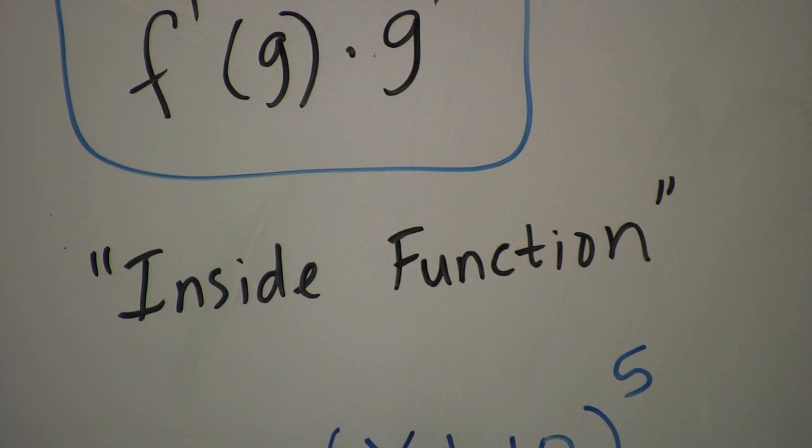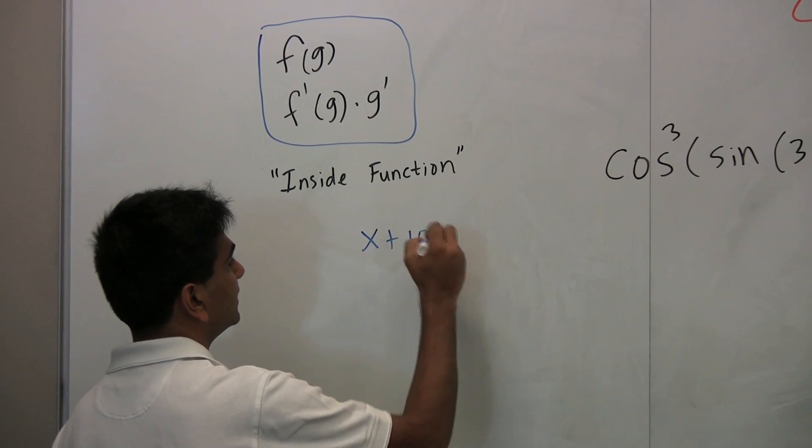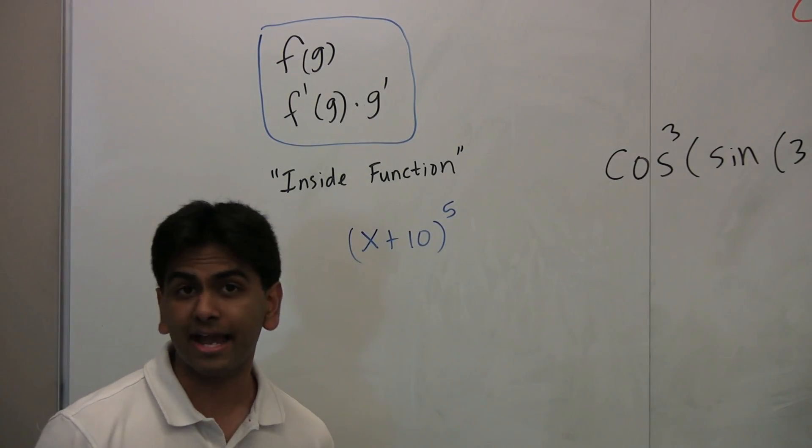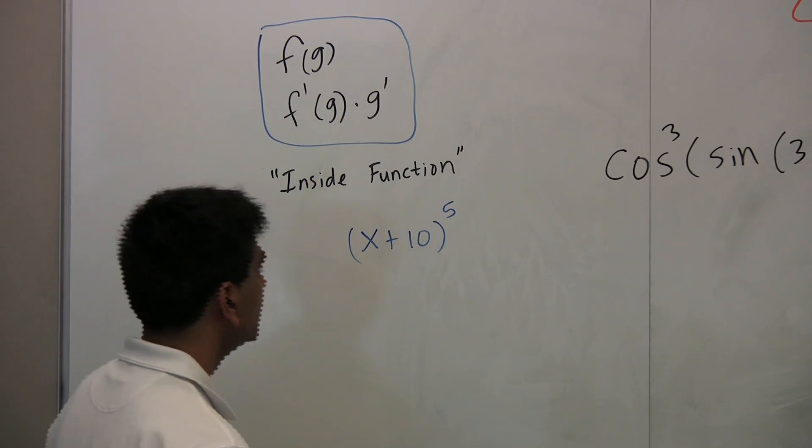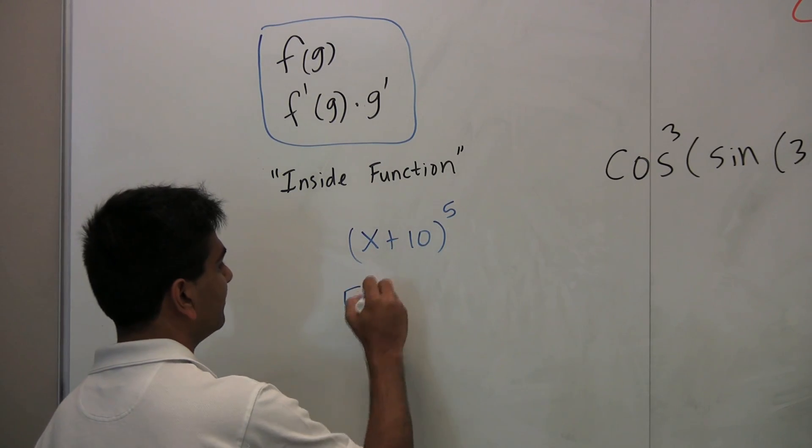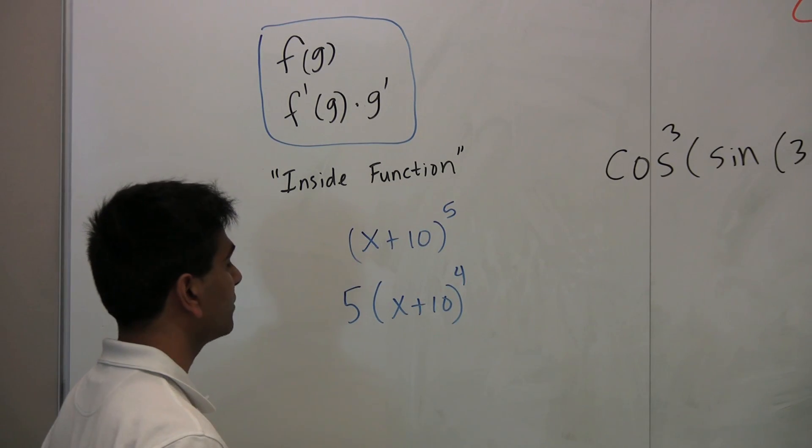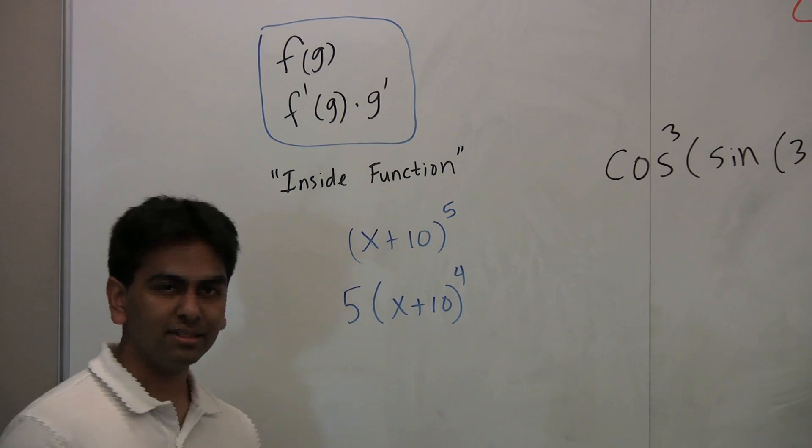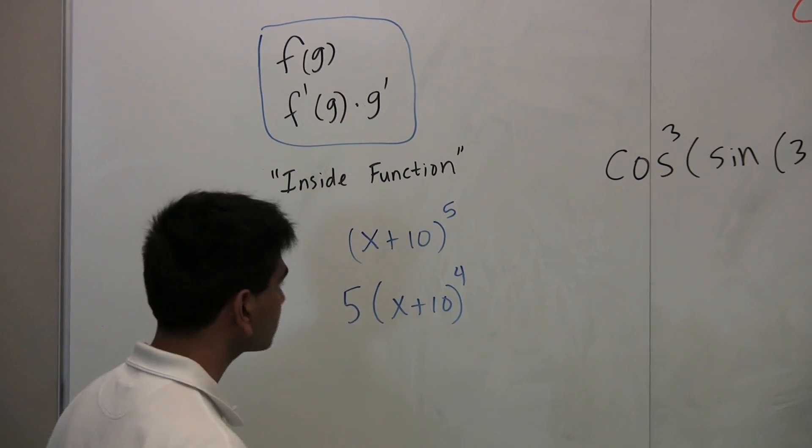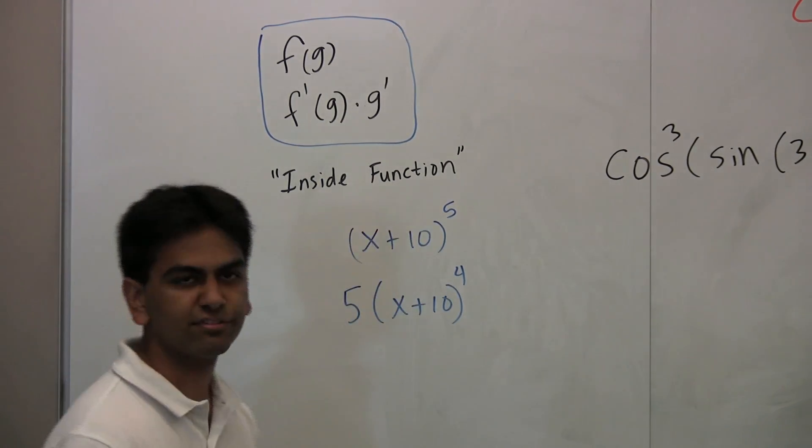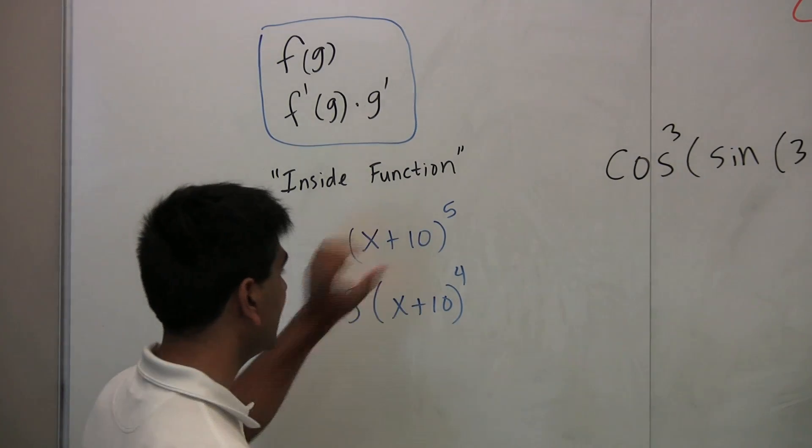So let's say you have (x + 10)^5. What's the derivative of that guy? Rather than expanding that whole thing out and then using the power rule, you can simply say 5(x + 10)^4. Notice this is sort of just like the power rule. Now in this case, the inside function is x + 10. The outside function is something to the fifth power. So smiley face to the fifth power, you can think of it that way. That's the outside function.